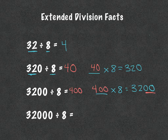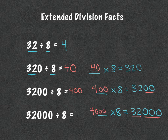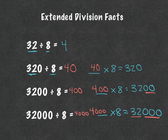And then the last one: what times 8 would equal 32,000? So 4 times 8 would equal 32, and this is actually 1,000 times bigger, so the answer is 4,000.